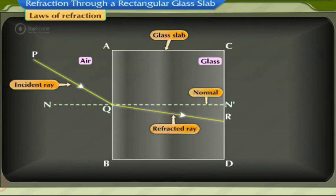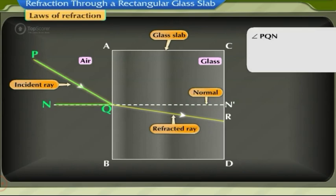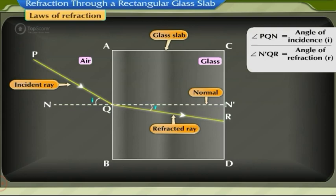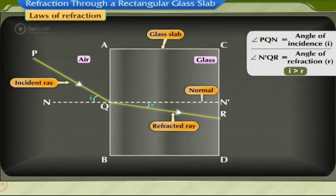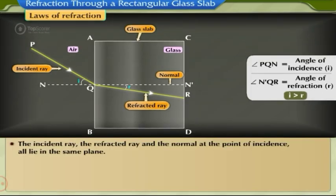The angle PQN' is the angle of incidence I and angle N'QR is the angle of refraction R, and here I is greater than R. The refraction takes place according to the laws of refraction, which are: the incident ray, the refracted ray, and the normal at the point of incidence all lie in the same plane.